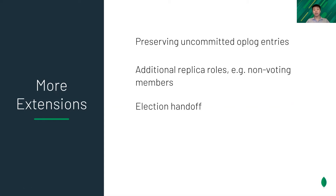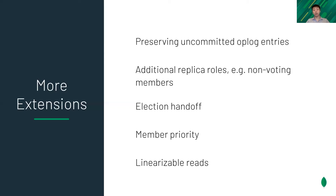Election handoff saves the election timeout on planned maintenance. Member priority is designed for users who prefer to deploy the primary closer to the application. Additionally, linearizable reads are supported. All of these features are implemented as extensions without touching the core of the replication protocol, so they don't affect the correctness.